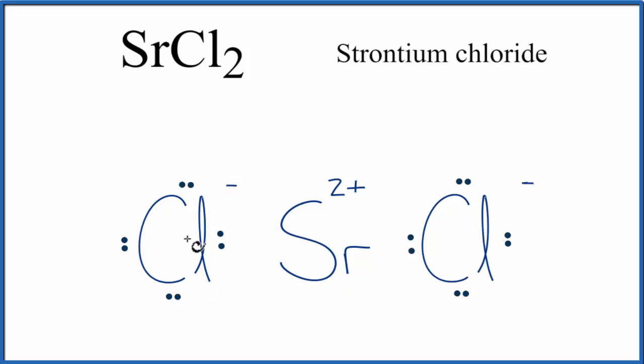Plus 2, and the minus 2's, they all add up to 0, and that makes sense, this is a neutral compound. So this positive here, and these negatives, they're attracted. And that's what forms the ionic bond in SrCl2.